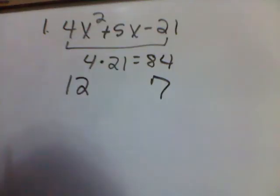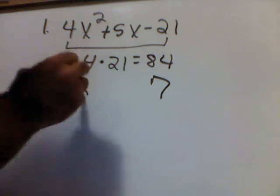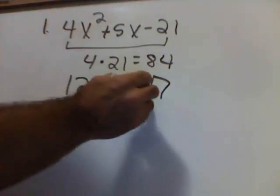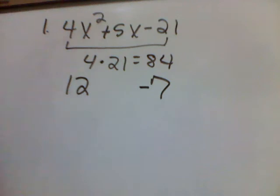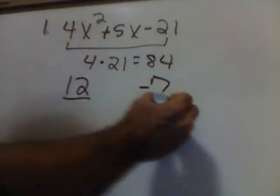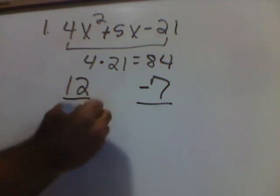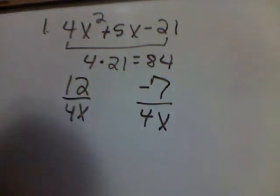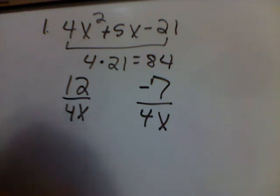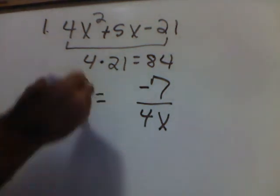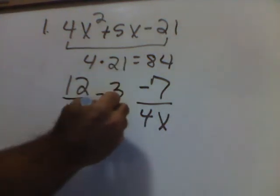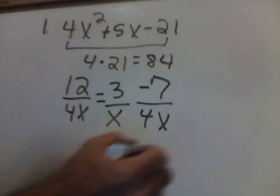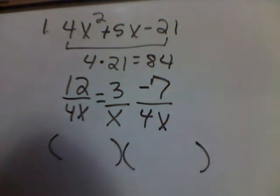Now, since I got a minus at the end, that means I have unlike signs here. The larger factor has the same sign as the middle, which makes my 7 negative. 12 and negative 7 add up to a negative 5. Now, my next step, we divide both of these by the first number and we put the variable on bottom. Same thing over here. Divide by 4 and put the variable on bottom. Now, the trick is to reduce these fractions. Well, I can reduce 12 over 4x into a 3 over 1x. The negative 7 over 4x, that does not reduce.